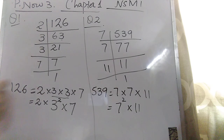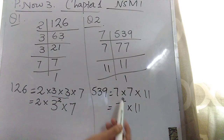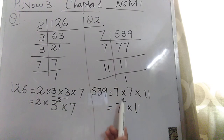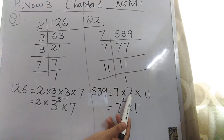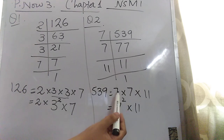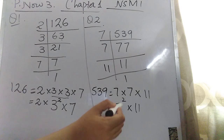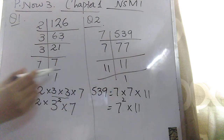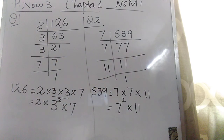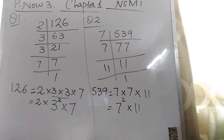So the answer is 7² × 11. There are two 7s, which means we write 7 to the power square, because 7 squared means you multiply 7 by 7. That is your answer for Practice Now 3.